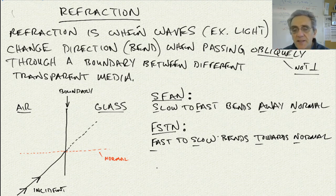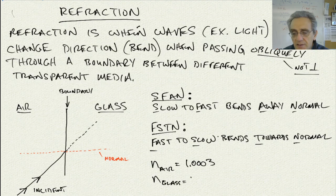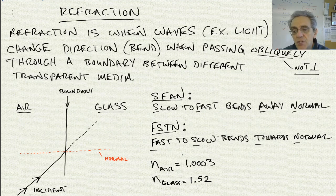In order to do this, we need indices of refraction. If you look these up, they're in a table provided for you, or you can Google some common indices of refraction. Specifically, N for air is equal to 1.0003, and N for quartz glass is 1.52.